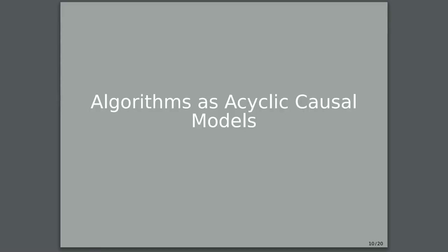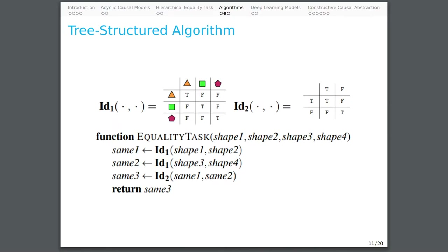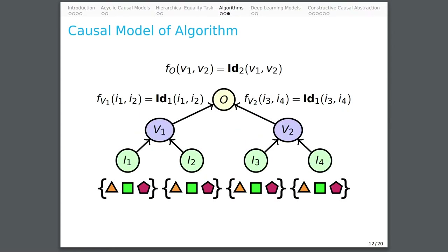Consider the following tree-structured algorithm that solves this task by computing a simple equality relation three times. Specifically, it computes whether the first two inputs are equal, then whether the second two inputs are equal, and then whether the truth-valued outputs of these first two computations are equal. This algorithm is easily represented as a causal model with five variables: four for the inputs, one for the output, and two to store the output of the simple equality computations. The left intermediate variable is true when the first two inputs are equal and false otherwise, and the right intermediate variable is similarly determined from the second two input variables. The output variable is determined by the two intermediate variables.